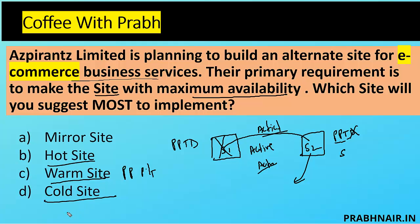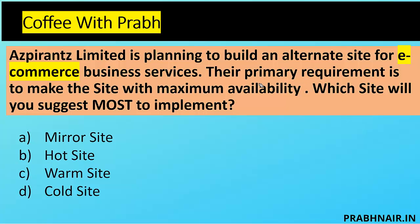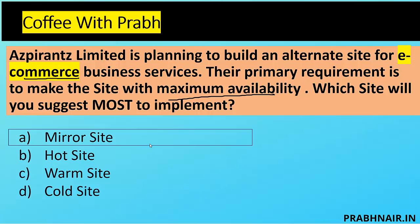The question specifically talks about the requirement of e-commerce, which is maximum availability — the business is driven by the website and they're looking for maximum availability. So if you go by the restoration part, mirror site is basically the most relevant. That's why the answer is A. The keyword is 'most' — most basically means mandatory.